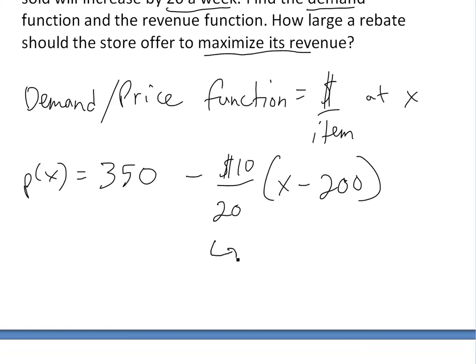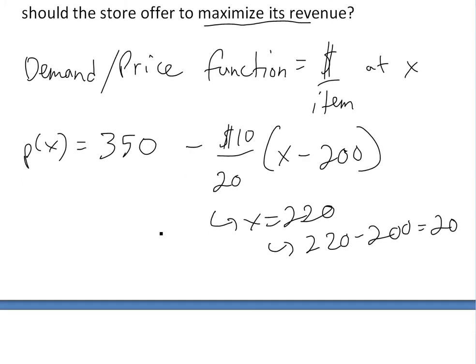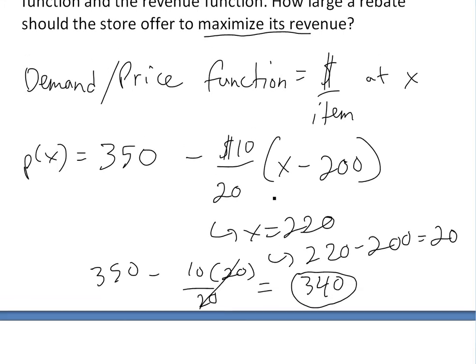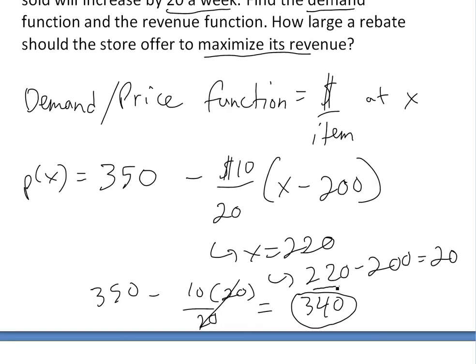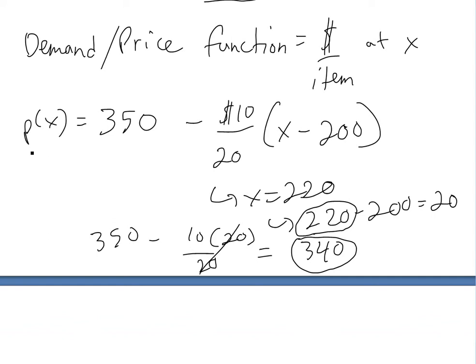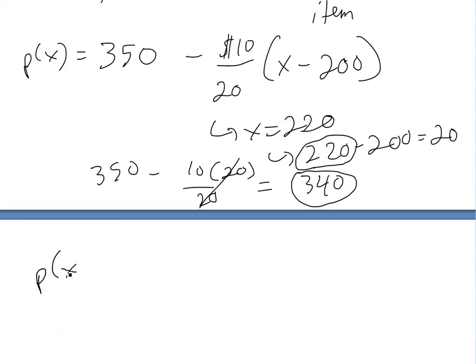You can see how this works: if X equals 220 and you're offering the rebate, then 220 minus 200 equals 20. Then we have 350 minus (10/20) times 20, which cancels out. The price is just 340, which is expected, because if we rebate $10 and increase by 20 people a week, then X is 220 and we're selling it for $340 each because we're giving the $10 refund. So hopefully you understand how this works.